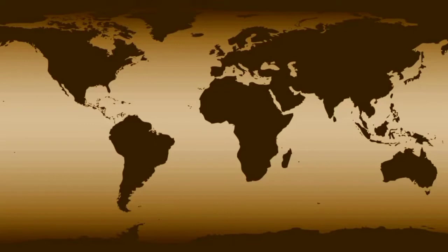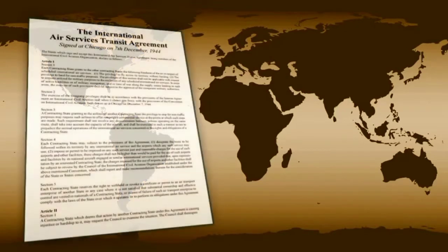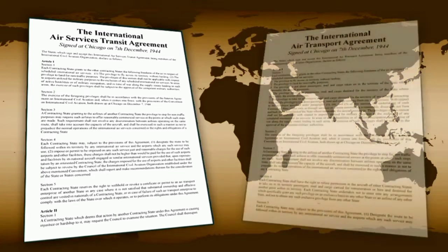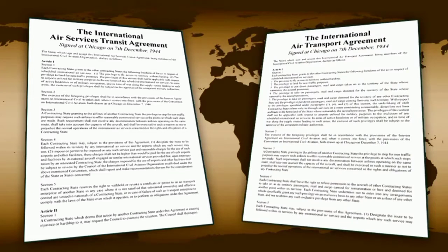These two supplementary agreements establish important international aviation frameworks. The first agreement, the International Air Services Transit Agreement, makes provision for aircraft of any participating state to fly over or land for technical reasons in the territory of any other participating state. The second agreement, the International Air Transport Agreement, further provided for the carriage of traffic between the state of registry of an aircraft and any other participating state.